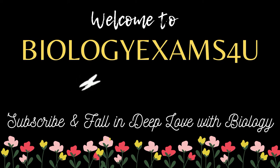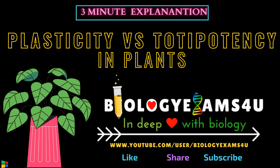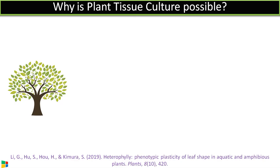Welcome to biology exams4u.com. Today's topic is the difference between plasticity and totipotency in plants. Plant tissue culture is comparatively easy compared to animal tissue culture because plants are endowed with two important qualities.